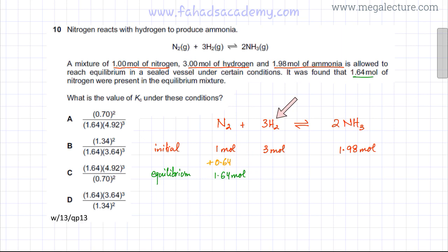If 0.64 moles of N2 are produced, then the amount of moles of H2 that would be produced would be 0.64 multiplied by 3, because the moles of H2 are going to be 3 times that. So for every 1 N2, 3 H2 are produced. So 0.64 times 3 moles of H2 are going to be produced. And if more reactants are produced, then the amount of products is going to decrease.